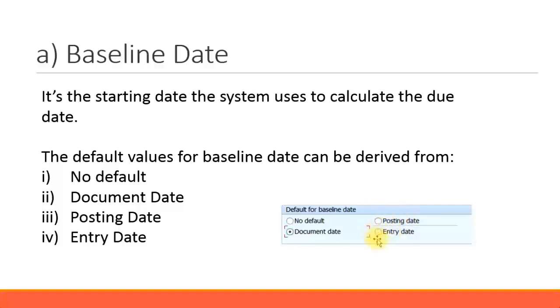Entry date. This entry date you cannot change because that is a date which you are actually keying in the entries in the system. Or you can leave it as no default date. That means no default, the baseline date will be blank and you can later go and enter your own baseline date. So those are the four options given to calculate the baseline date in the system.